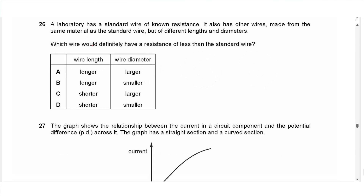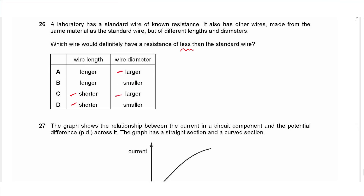Question 26: wires made from the same material as a standard wire are compared for resistance. Lower resistance requires a shorter wire and a wider (larger) cross-sectional area. The answer is C.